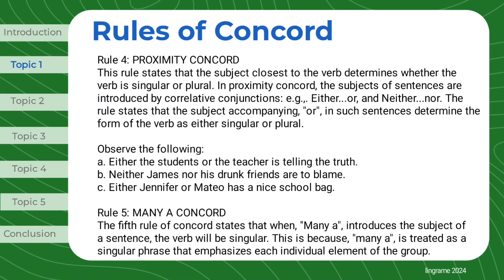Rule 4: Proximity Concord. This rule states that the subject closest to the verb determines whether the verb is singular or plural. In Proximity Concord, the subjects of sentences are introduced by correlative conjunctions — for example, 'either...or' and 'neither...nor.' The rule states that the subject accompanying 'or' in such sentences determines the form of the verb as either singular or plural. Observe the following: 'Either the students or the teacher is telling the truth.' 'Neither James nor his drunk friends are to blame.' 'Either Jennifer or Matteo has a nice school bag.'